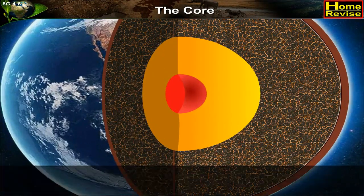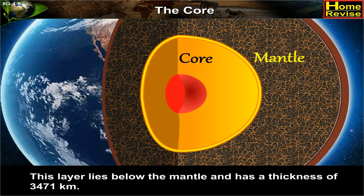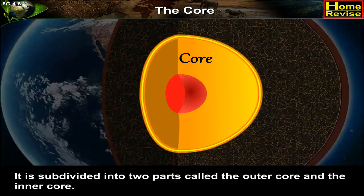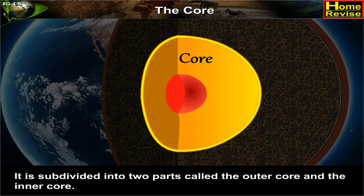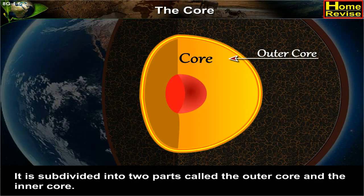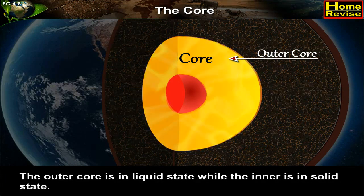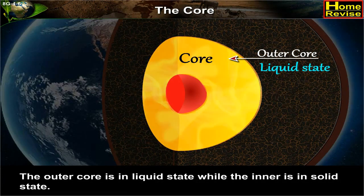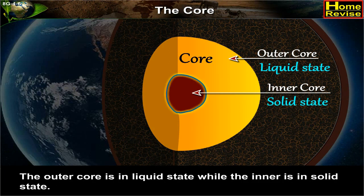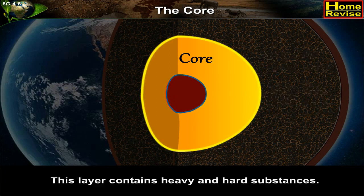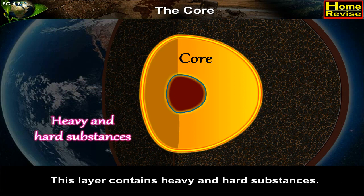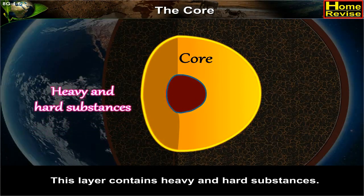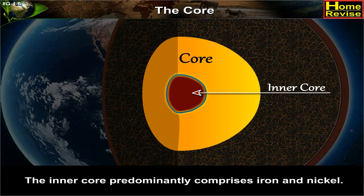The core: This layer lies below the mantle and has a thickness of 3471 kilometers. It is subdivided into two parts called the outer core and the inner core. The outer core is in liquid state while the inner is in solid state. This layer contains heavy and hard substances. The inner core predominantly comprises iron and nickel.